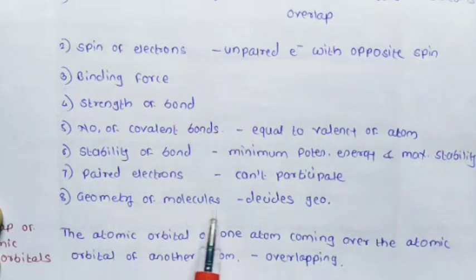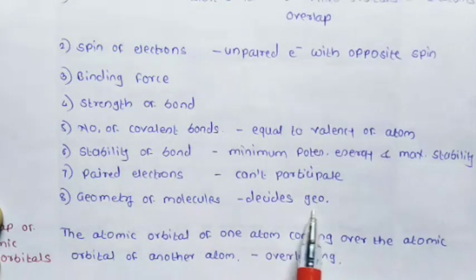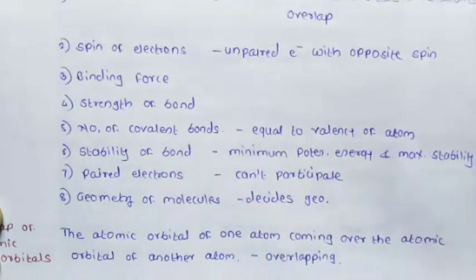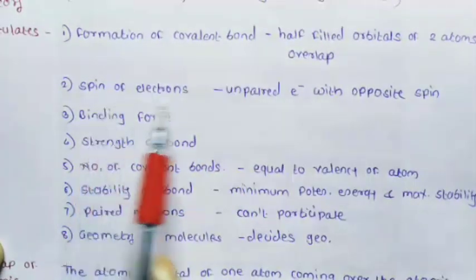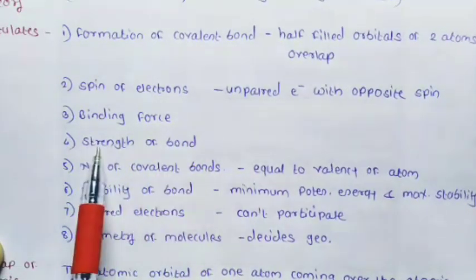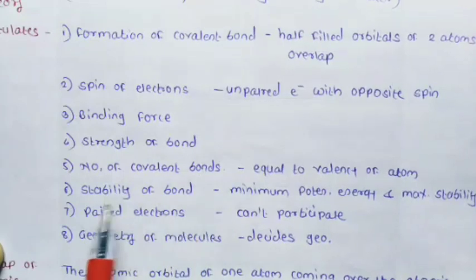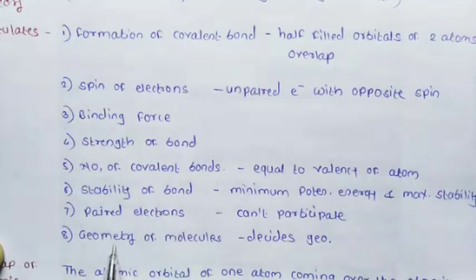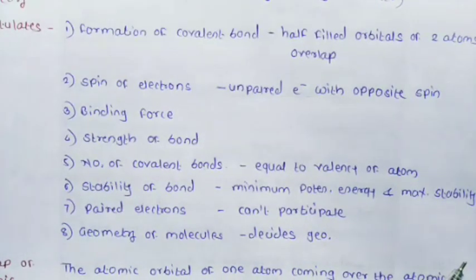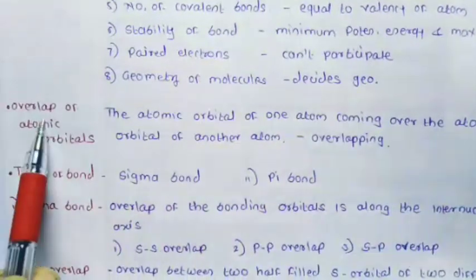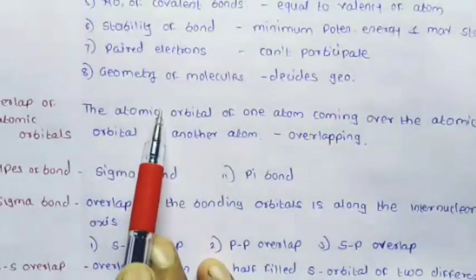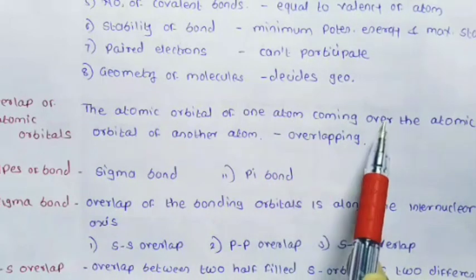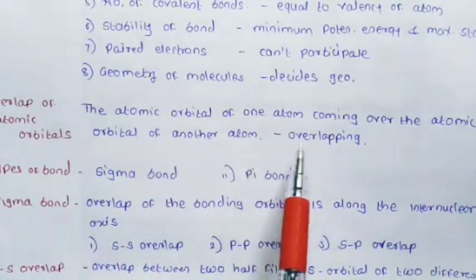The seventh postulate concerns geometry of the molecule — valence bond theory determines the geometry of molecules. To summarize the postulates: (1) formation of covalent bond, (2) spin of electrons, (3) binding force, (4) strength of bond, (5) number of covalent bonds, (6) stability of bond, (7) paired electrons and molecular geometry. Overlap of atomic orbitals means the atomic orbital of one atom comes over the atomic orbital of another atom; this is called overlap.